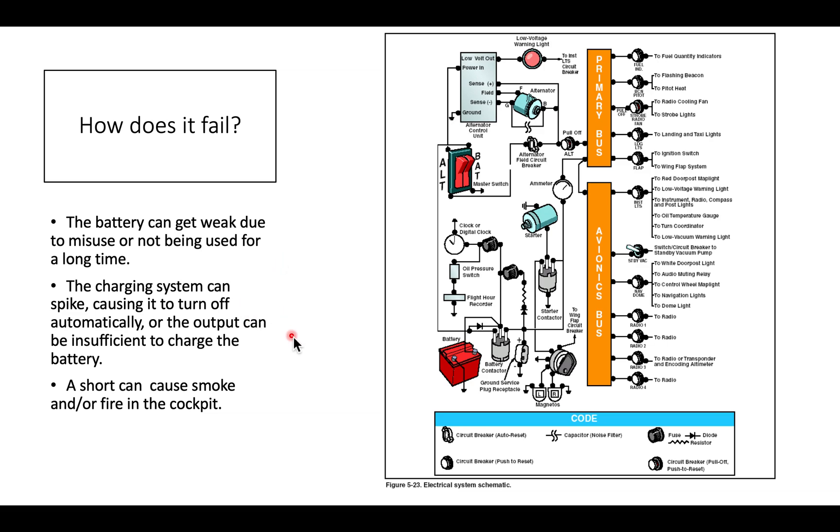The second way things can fail is the charging system spikes, causing itself to turn off automatically. Or the alternator can put out a lower than normal voltage due to some internal failures. In either of those cases, our remedy is going to be about the same. And then the third and most serious way that the system can fail is you get a short circuit somewhere out in these devices that causes too much current to draw. And the wires start melting and you get smoke and even fire in the cockpit.